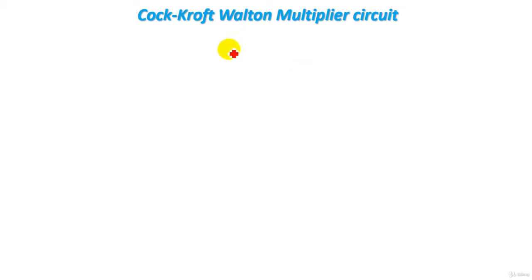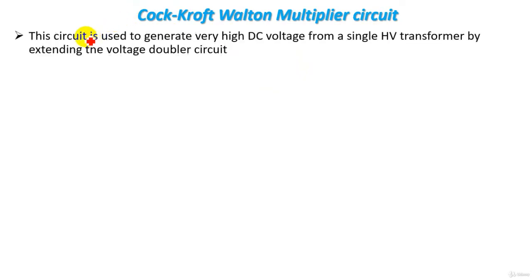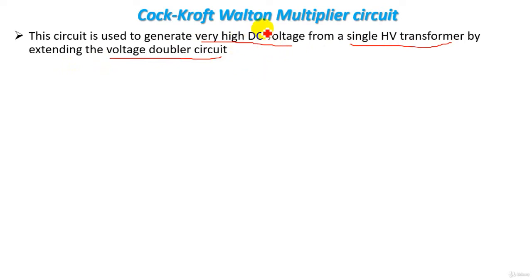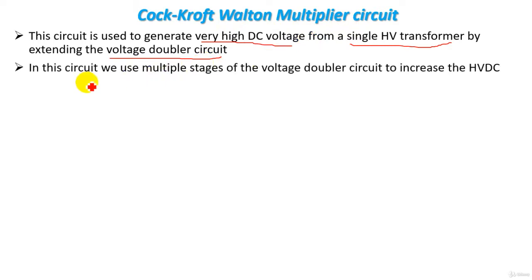In this tutorial we will understand the best circuit for producing high voltage DC, called the Cockcroft-Walton multiplier circuit. This circuit is used to generate very high DC voltage from a single-phase high voltage transformer by extending the voltage doubler circuit. While a voltage doubler circuit can double the voltage, the Cockcroft-Walton multiplier uses multiple stages of voltage doubler circuits to produce voltages much higher than double.